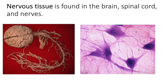Nervous tissue is composed of a very important cell type called the neuron. Neurons transmit information using electricity — they network together and transmit electricity from one cell to another, so that all of your neurons form the electrical grid of your body.